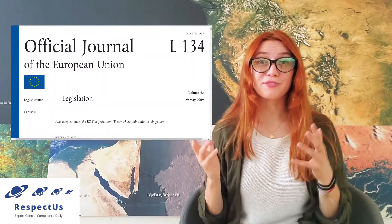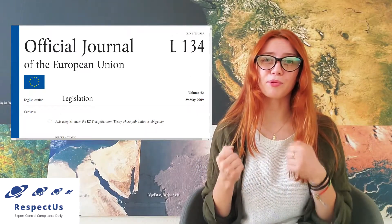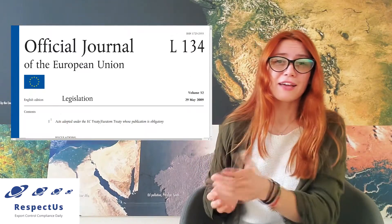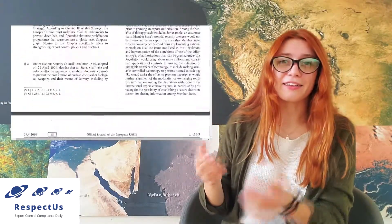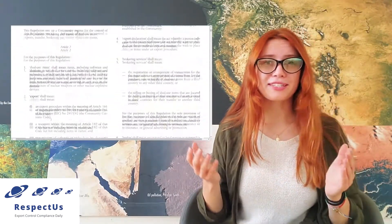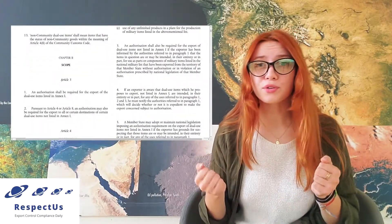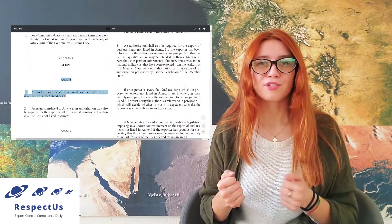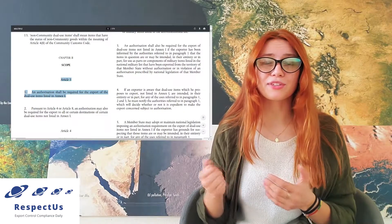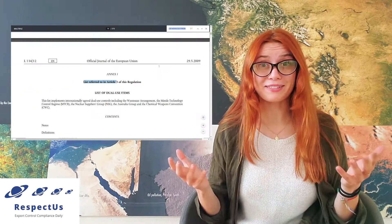So the first thing that we will do is to identify the applicable rule. If we scroll our document a little bit down we find Article 3, saying that an authorization shall be required for the export of dual-use items listed in Annex 1. So now let us go to Annex 1 and see how this rule applies.